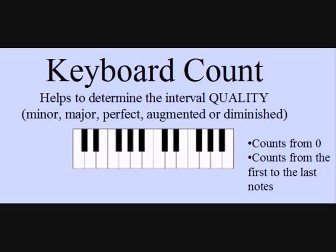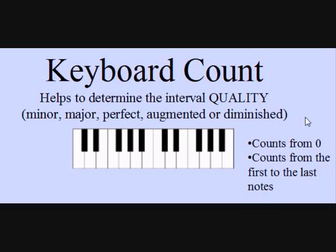The keyboard count is what helps us determine the quality of the interval. This is quite similar to counting semitones. For practical reasons, if we count from C to A, we start at zero and count zero, one, two, three, four, five, six, seven, eight, nine — and we discover that from C to A there are nine semitones. That will help us determine whether the interval is minor, major, perfect, augmented, or diminished.